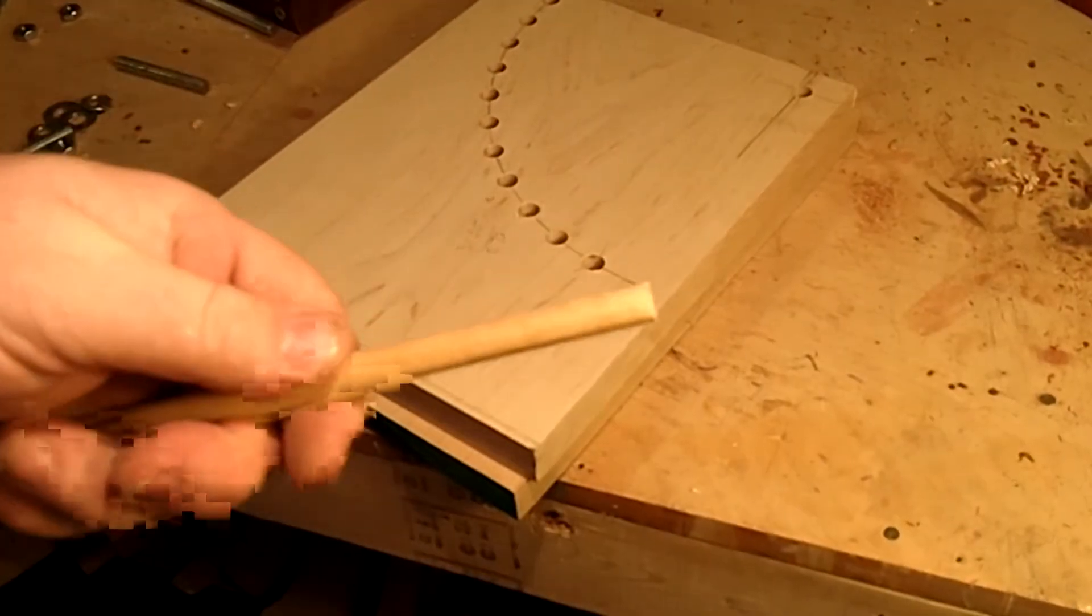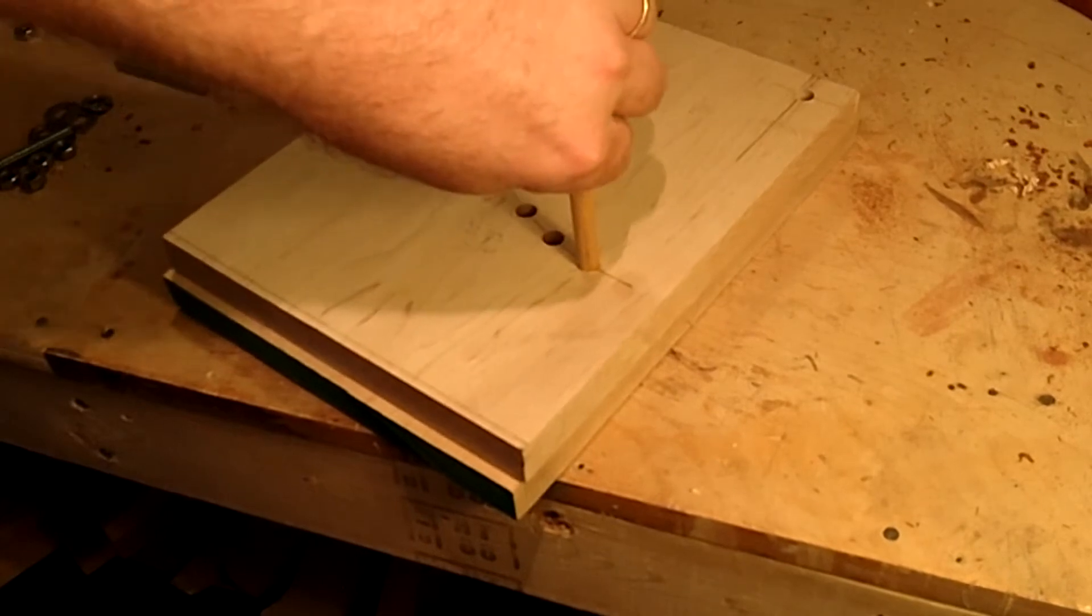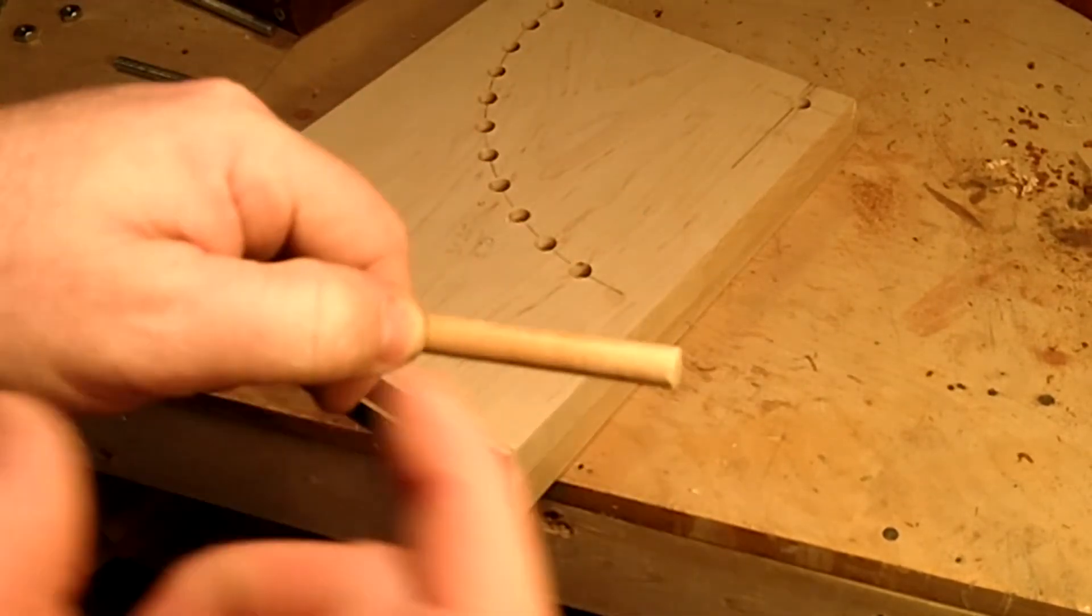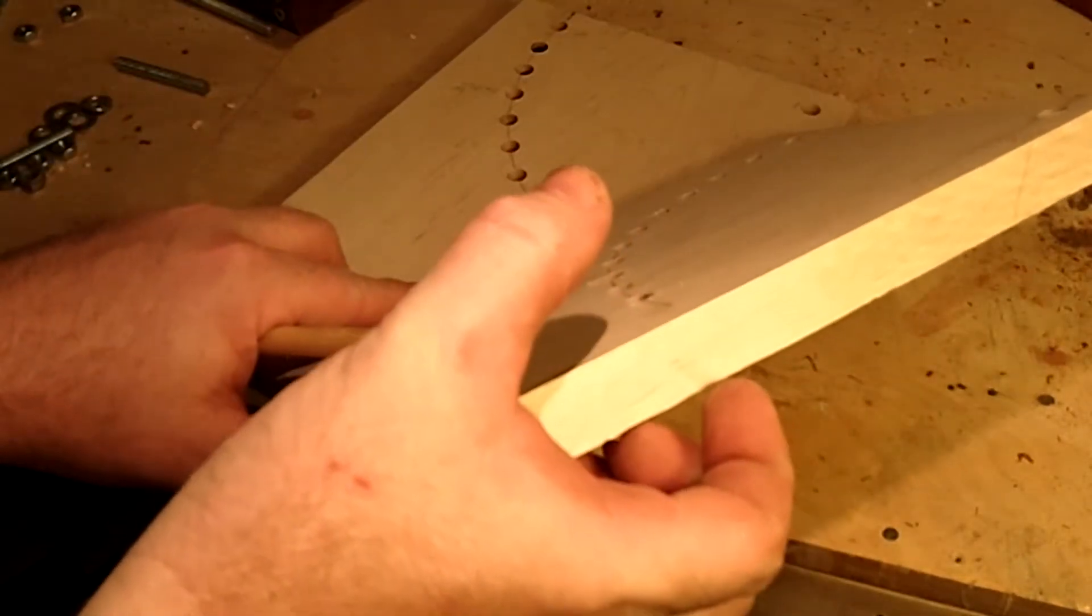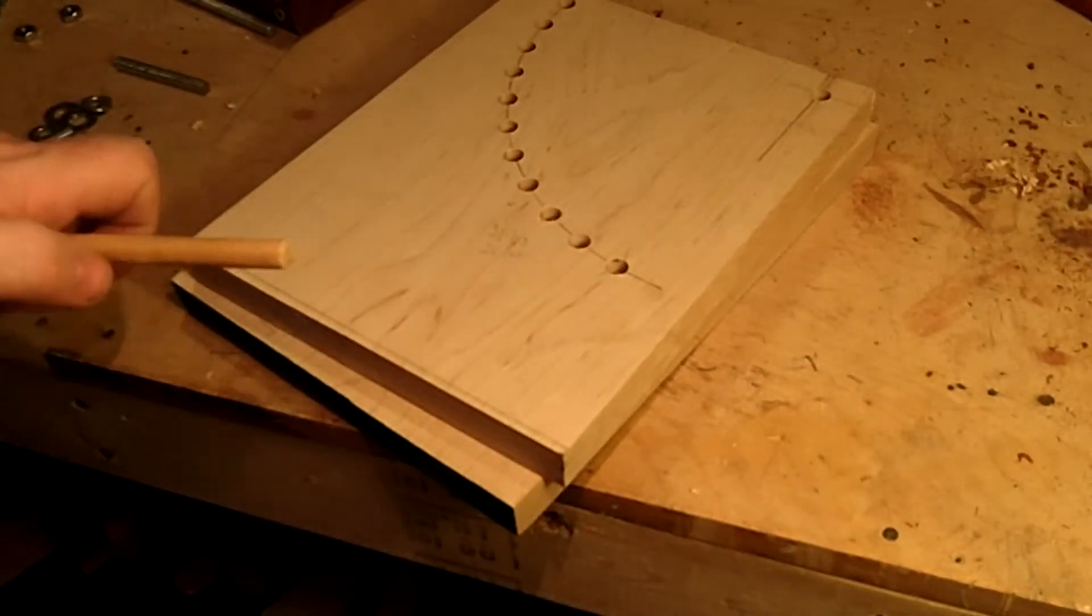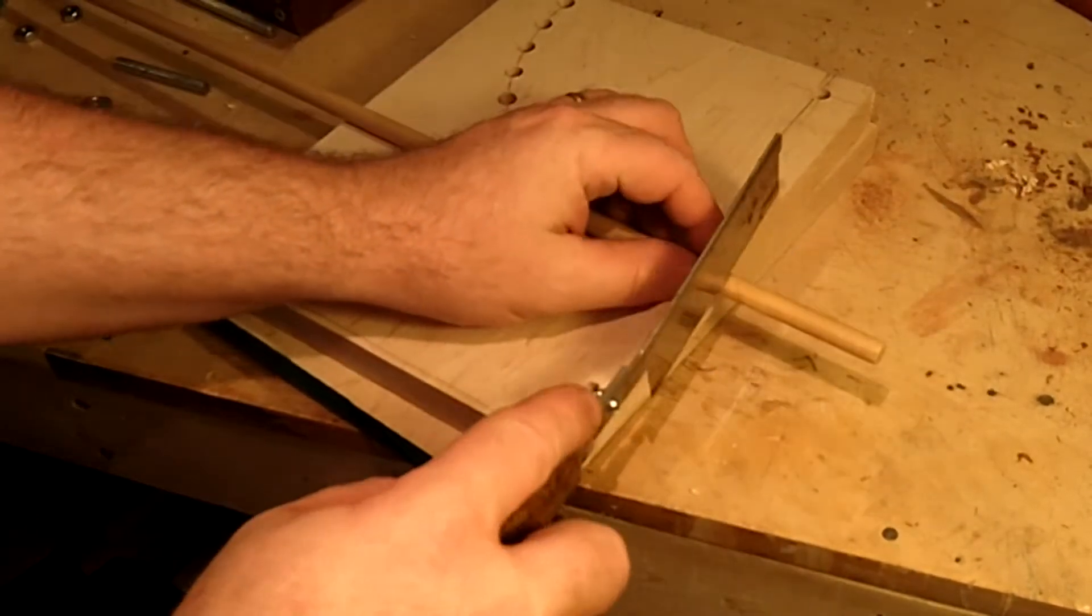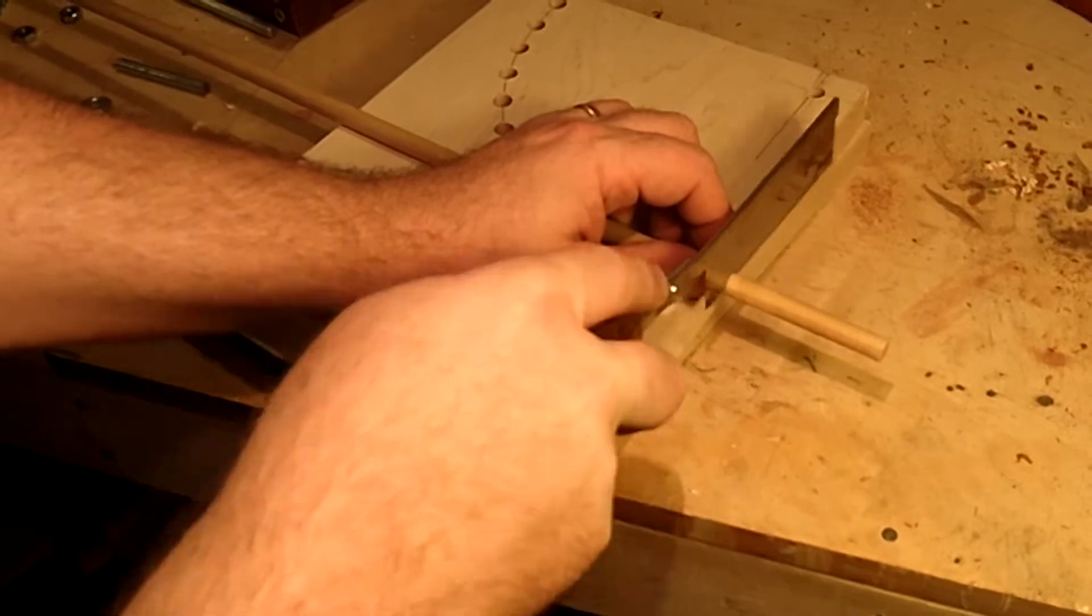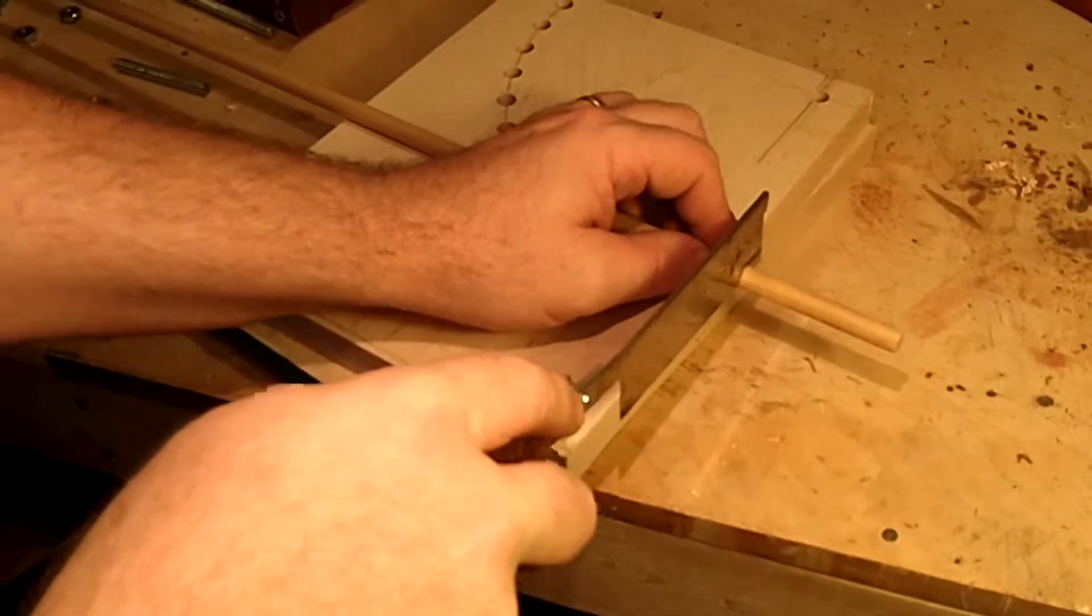Then we're going to take a dowel rod that fits the holes that we drilled. And I'm just going to cut off a piece here wide enough to fit through the board and still stick out enough to support the bracket. Just whatever you feel comfortable with and it really depends on the size of the wood you use on the brackets.